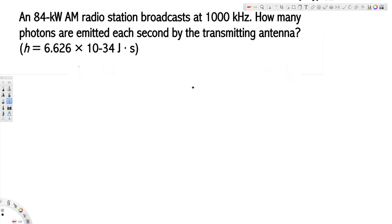To find the number of photons emitted by the antenna, we use this equation: n equals P over E. P is the power, E is the energy. Here we have the power provided, that is 84 kilowatts, but we don't have the energy, right? We have to find the energy.